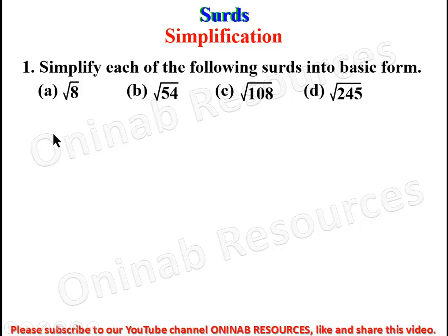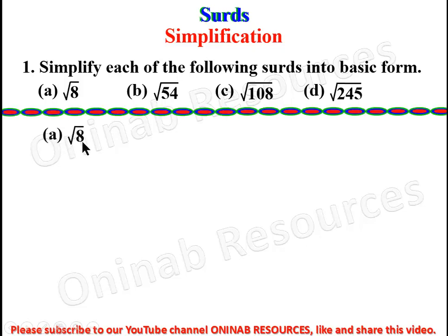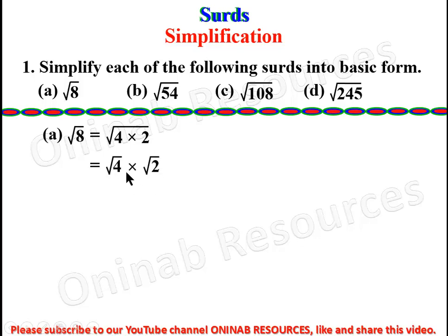So we start with the first problem: square root of 8. Since 8 is 4 times 2, and 4 is a perfect square, we express it as square root of 4 times 2. We separate them: square root of 4 times square root of 2. Square root of 4 is 2, so we have 2 root 2. That is the basic form of root 8.